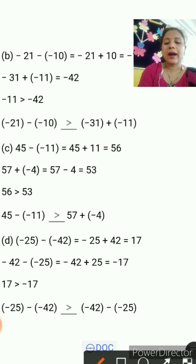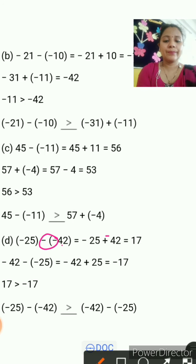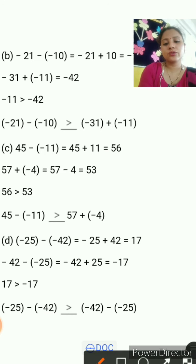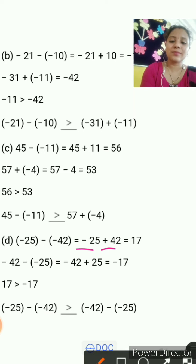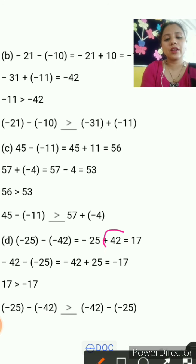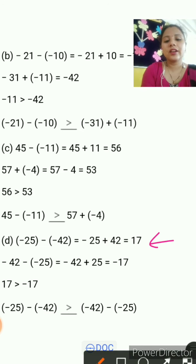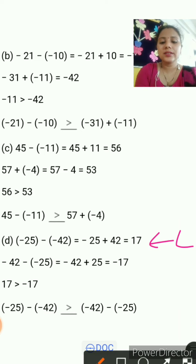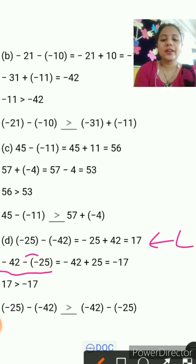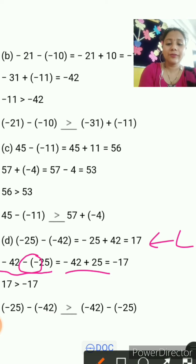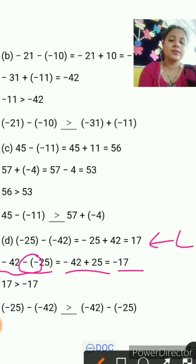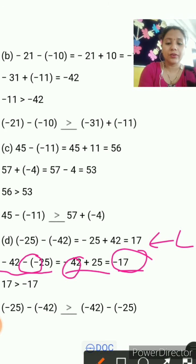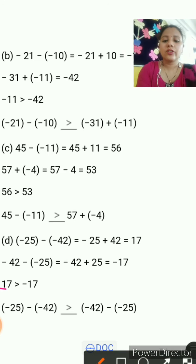Part d: 25 minus minus 42. Minus minus becomes plus, so 25 plus 42. Then minus plus gives minus, so subtract 25 from 42: 42 minus 25 equals 17, and it is positive 17 because 42 is the greater positive value — left-hand side is 17. On the right: minus 42 minus minus 25 becomes minus 42 plus 25. Again 42 minus 25 equals 17, but this time it is minus 17 because the greater value is negative. So left-hand side 17 is greater than right-hand side minus 17.